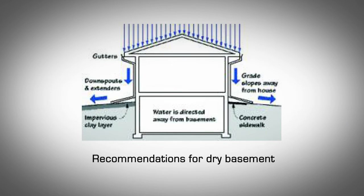Damp proofing and waterproofing applications for AMBIC ICF. There are three types of membranes that can be applied to AMBIC ICF: liquid applied membranes, peel and stick membranes, and dimple sheets. Each has advantages and disadvantages. Before deciding which to use, always follow the manufacturer's installation procedures for ICF application.